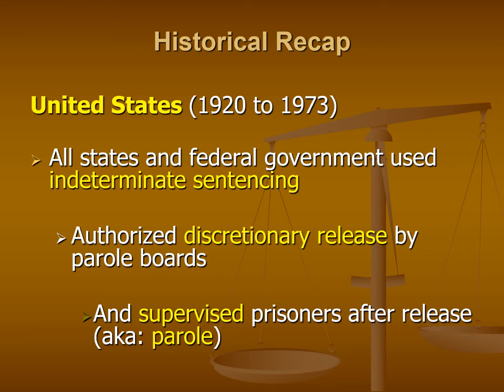Once the person had served enough time to meet their minimum amount of time in prison, they would go before a parole board and the parole board would review that individual's case to see whether or not they were eligible and ready for release back into society. At the point at which the parole board decided if somebody was eligible for release, this was known as discretionary release, where the discretion came from the parole board. Once the parole board determined somebody was ready, they were released onto what we typically call parole — supervised post-release supervision after release from prison.